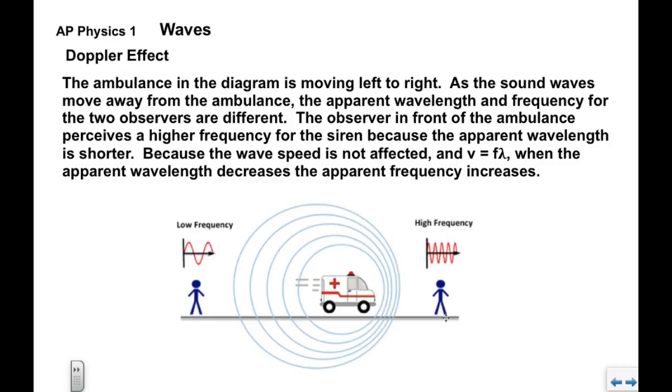The observer in front of the ambulance perceives a higher frequency than actual because the apparent wavelength is shorter. You can see as the ambulance moves left to right, these wavelengths here in front of the ambulance are closer together than they would be if the ambulance were standing still.